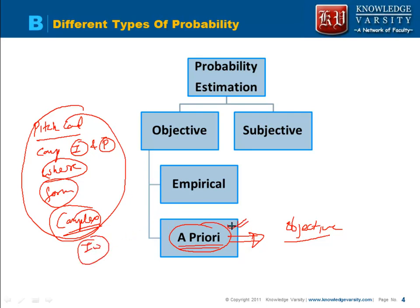So needless to say that this a priori probability is the most complex method. This is just seeing the historical data, whereas subjective is just your gut feeling.